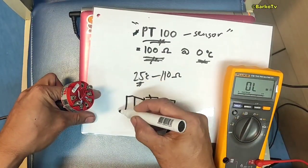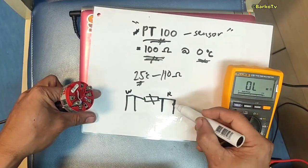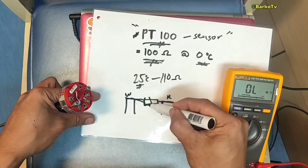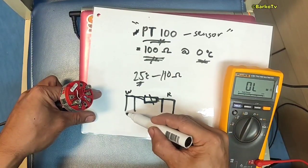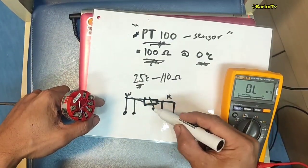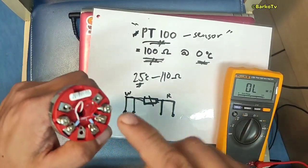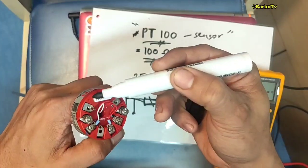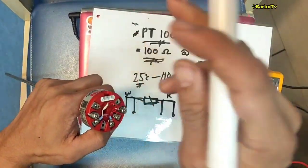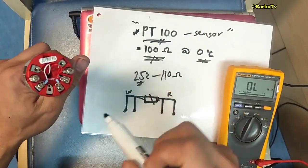For four wires, you have two whites and two reds like this. When connecting to the transmitter, the diagram shows terminals one, two, and two wires — two whites and two reds. Then plus and minus are for the analog output to your PLC, which is 4 to 20 mA.